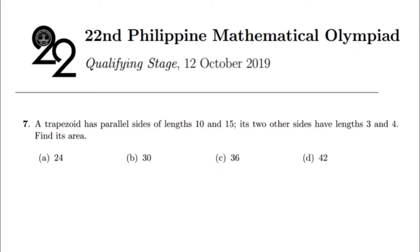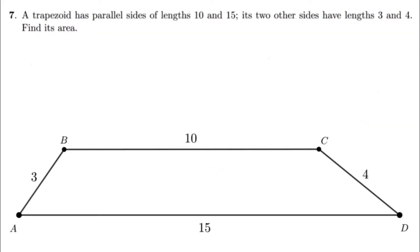A trapezoid has parallel sides of lengths 10 and 15. Its two other sides have lengths 3 and 4. Find its area. As with every geometry problem, we shall start with the figure. Here we have the figure—a trapezoid. We've labeled it ABCD with the bases 10 and 15 being BC and AD respectively.